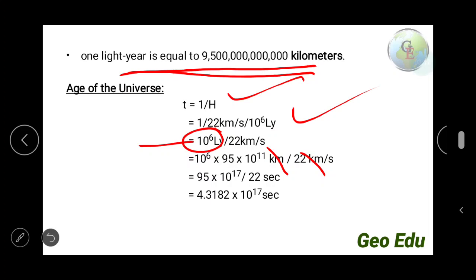So 95 into 10 to the power 17 divided by 22 second. The calculated value is 4.3182 into 10 to the power 17 second.